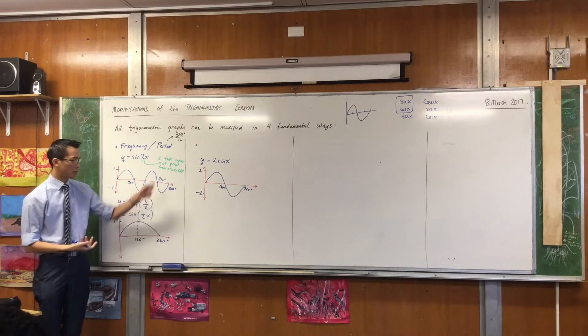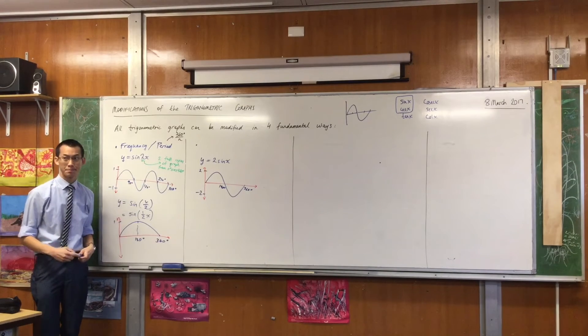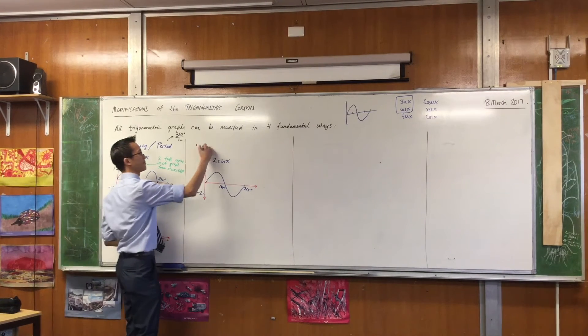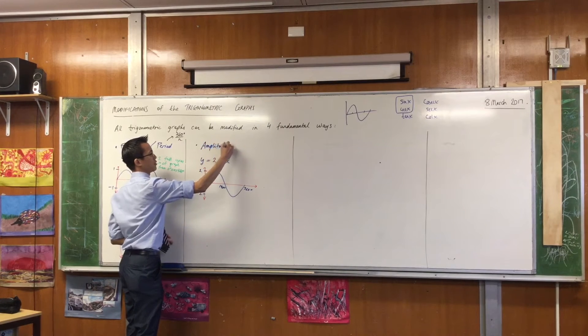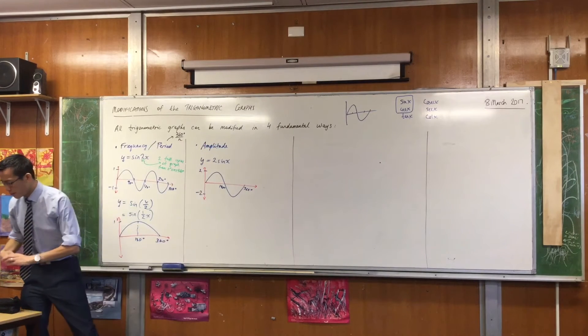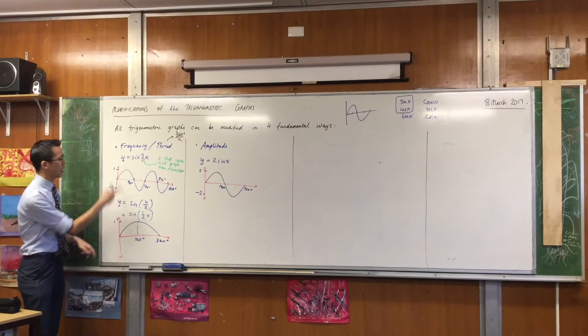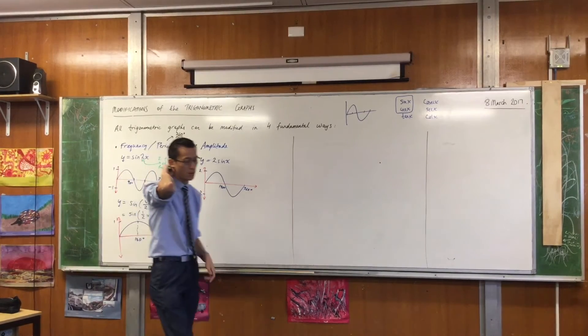So what do we call this, changing it in this way, up and down? We call this amplitude. Now, amplitude is actually much simpler, I think, than frequency and period. Frequency and period is a bit more confusing.